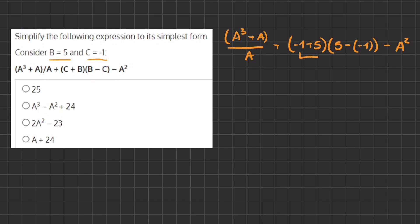Now let's simplify what we have in these two parentheses. We have negative 1 plus 5, which gives us a positive 4. And we have 5 minus a negative 1, and remember that a negative and a negative make a positive. So we have 5 plus 1, which gives us 6.